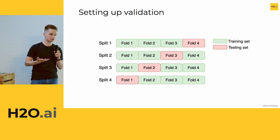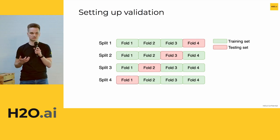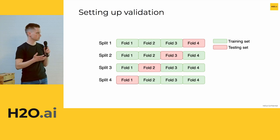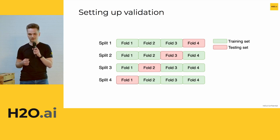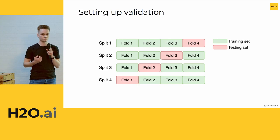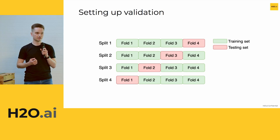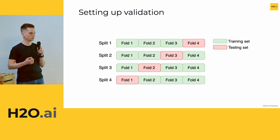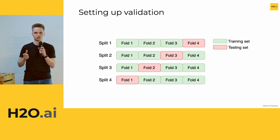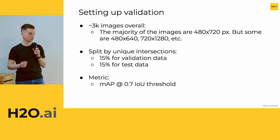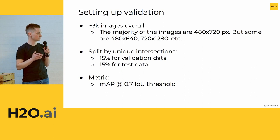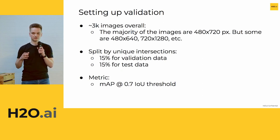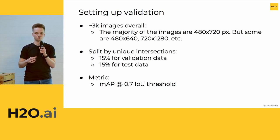To start building models, once you have a dataset, you build a validation setup. The most popular choice is cross-validation — splitting data into multiple folds, training multiple models, and combining the metric. However, cross-validation is not ideal for deep learning because experiments can take hours or days. So in deep learning we mostly use a holdout set. For this dataset I split it into two parts, with 15% each for validation and test, split by unique cameras so the model generalizes across cameras rather than overfitting to a single camera view.